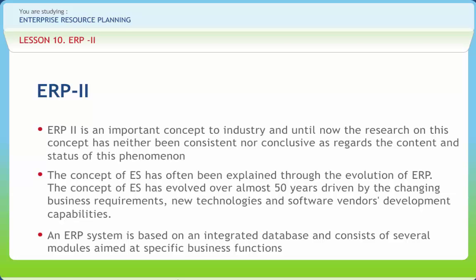According to the American Production and Inventory Control Society, APICS defines ERP as a method for the effective planning and controlling of all the resources needed to take, make, ship, and account for customer orders in a manufacturing, distribution, or service company.